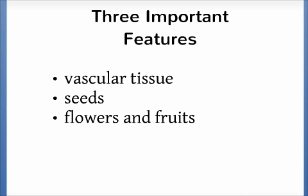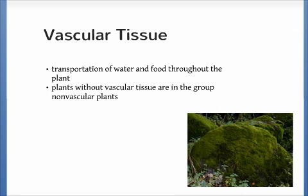The three important features used by botanists to divide plants into the four groups are vascular tissue, seeds, and flowers and fruits. The first feature is vascular transportation of water and food throughout the plant. The phyla that existed before the evolution of vascular tissue are called non-vascular plants, meaning organisms in those phyla do not have vascular tissue. An example is moss, often referred to as the green fuzz on damp rocks and trees.